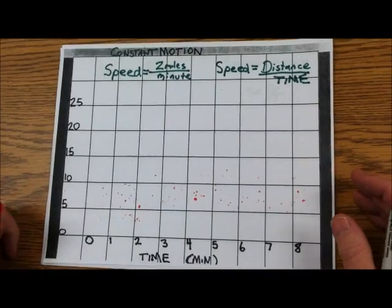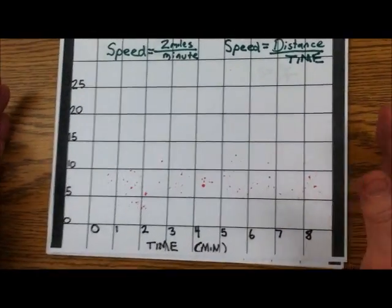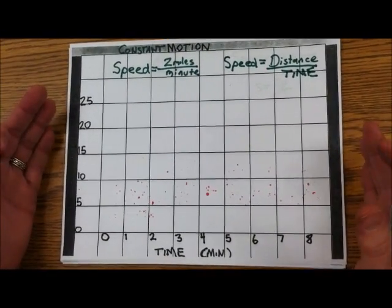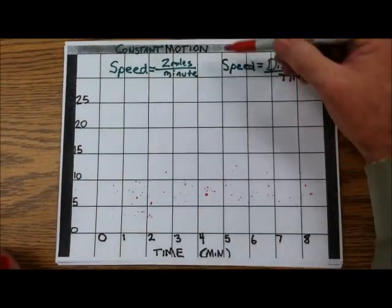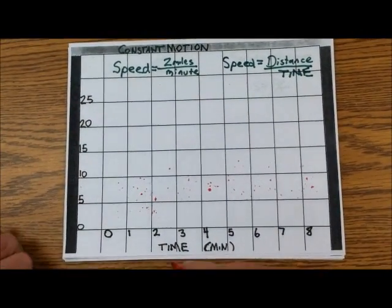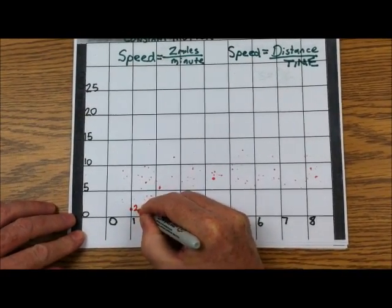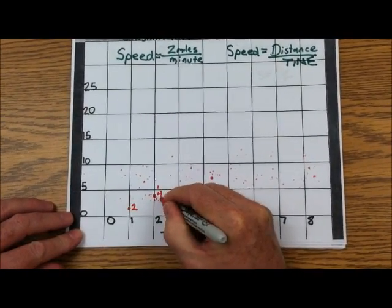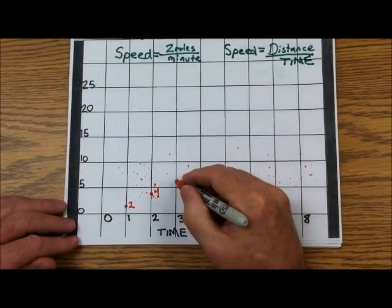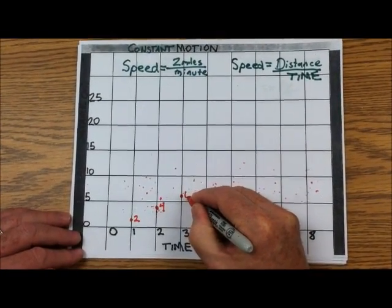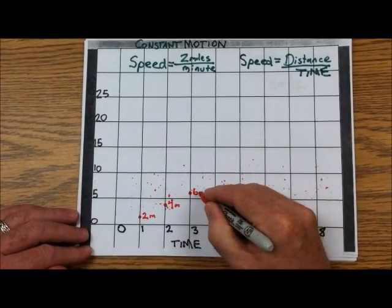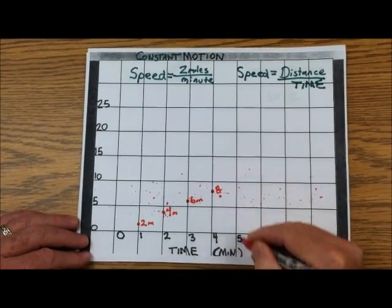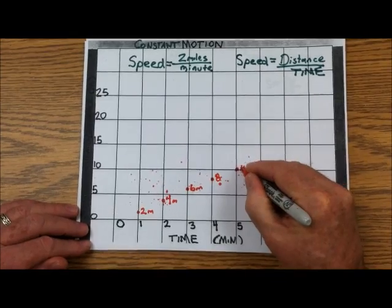On a graph you can actually just look at it and tell what's going on — we'll do the calculations too. Two miles per minute: the first minute we go two miles, the second minute four miles, the third minute six miles, then up by two to eight, then ten. These are miles.